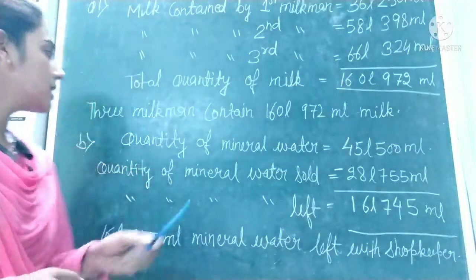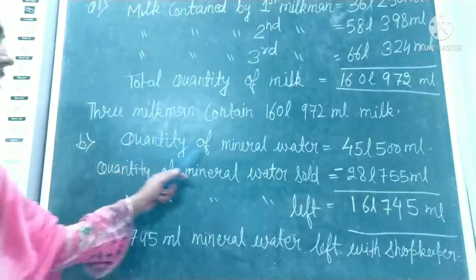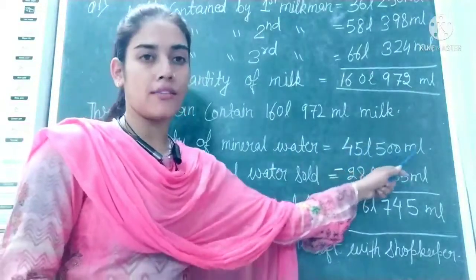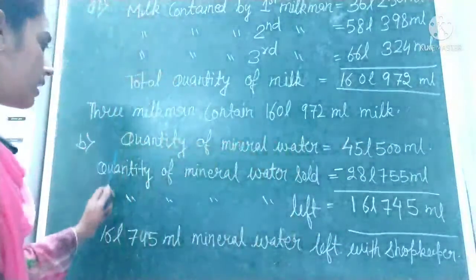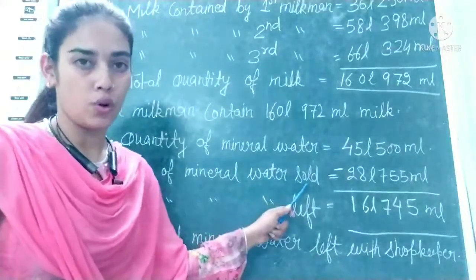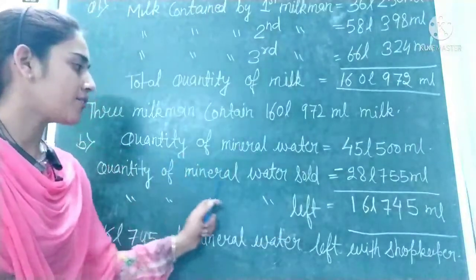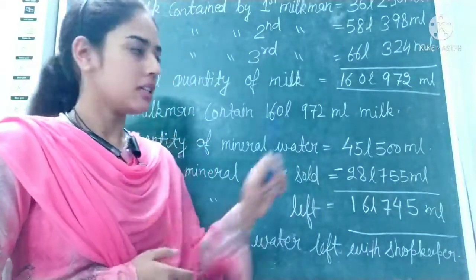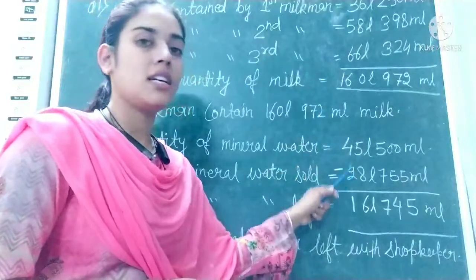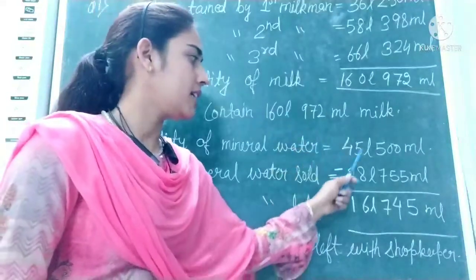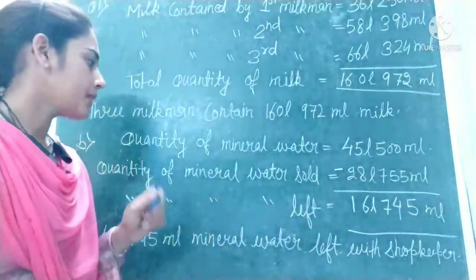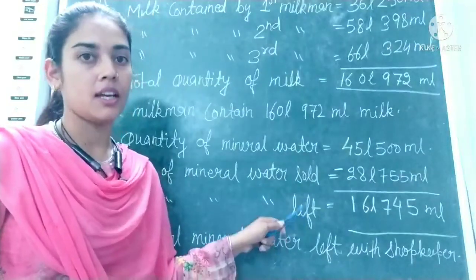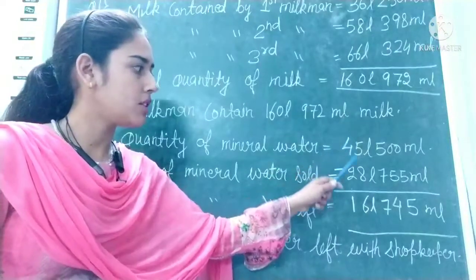Quantity of mineral water is 45 litres 500 millilitres. Quantity of mineral water sold is 28 litres 755 millilitres. This much we have and this quantity was sold out. Now we want to find the quantity of mineral water left.